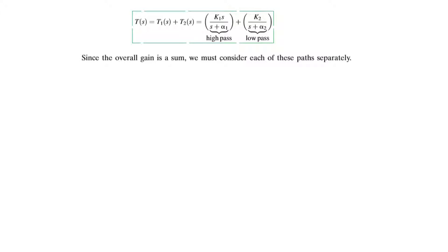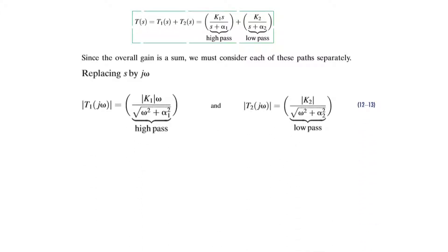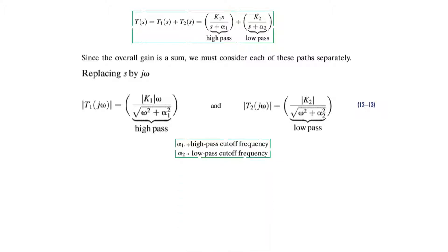Since the two filters are independent and separate, we can consider them individually. To find the frequency response, we replace s by jω. Taking the modulus, jω gives us ω² over α² — this is the overall gain of the high pass. Similarly, replacing s by jω and taking the modulus gives the overall gain of the low pass. From these we can identify α1 as the cutoff frequency for the high pass and α2 as the cutoff frequency for the low pass.